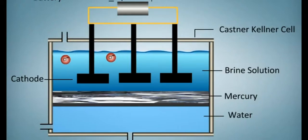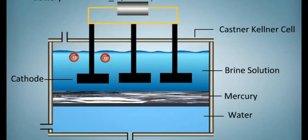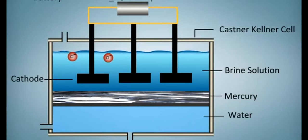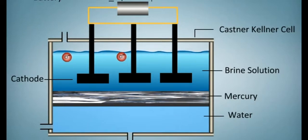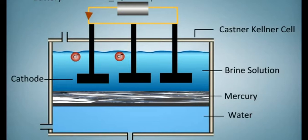The brine solution flows in the same direction and the anode consists of a number of graphite blocks. When electric current is passed through the cell, the following reaction occurs.